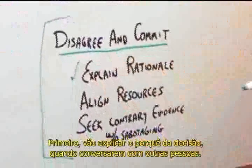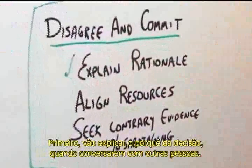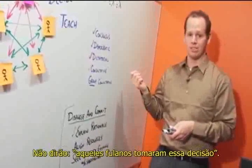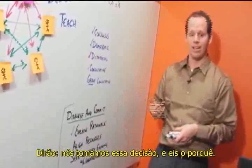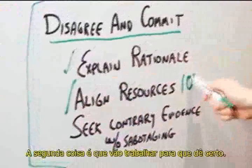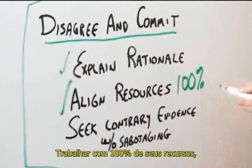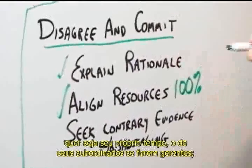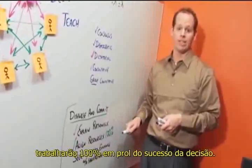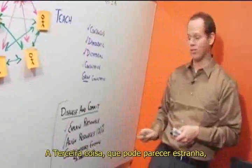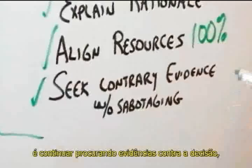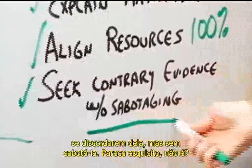First, they will explain the rationale of the decision when they talk about it to other people. They won't say, 'those dopey folks made this decision.' They'll say, 'we made this decision, and here's why.' The second thing is they will align their resources — and that's 100% compliance. Whether it's their own time or their groups if they're managers, they will do what the decision requires 100%. The third thing, and this is a little strange, is they will continue to seek contrary evidence if they disagree, but without sabotaging the decision.